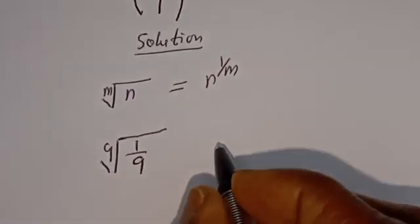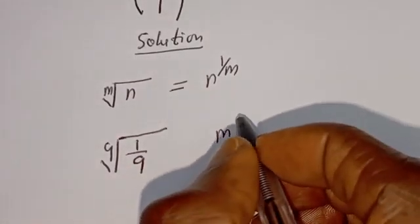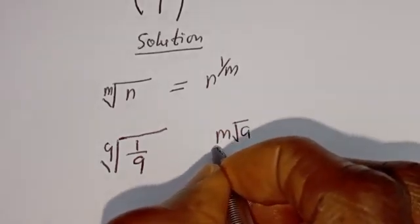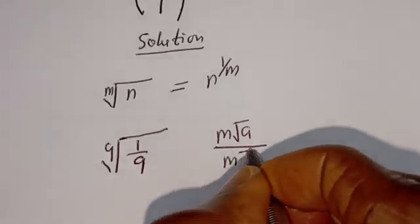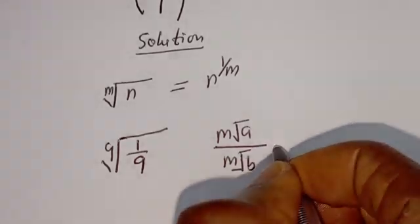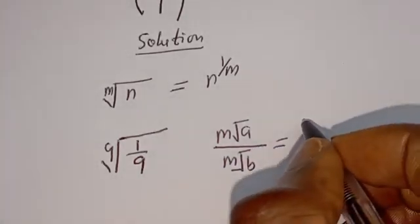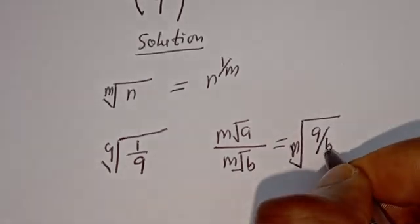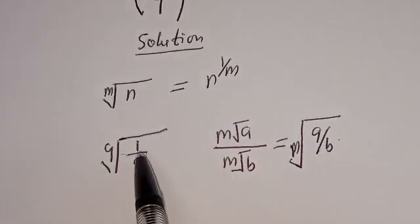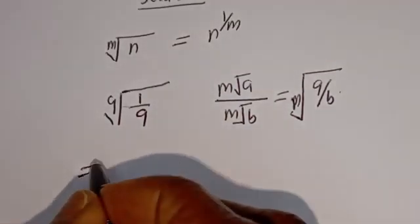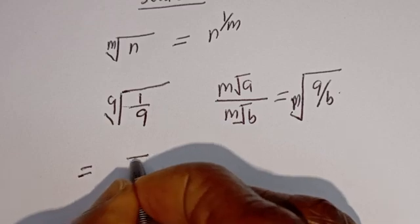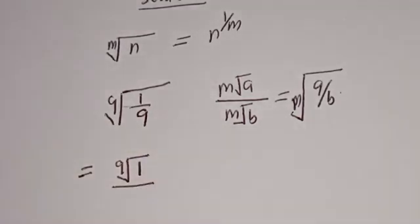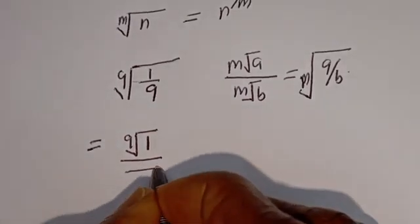Also take note that if you have the m-th root of a divided by the m-th root of b, this is equal to the m-th root of a over b. Then this can be written as the 9th root of 1 divided by the 9th root of 9.